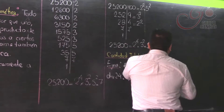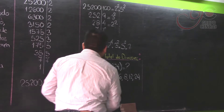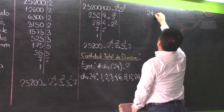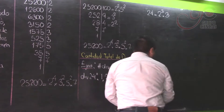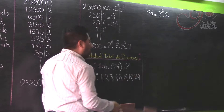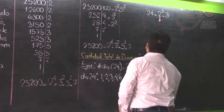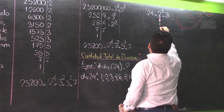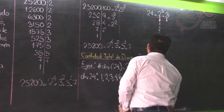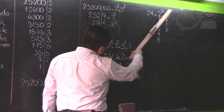Antes de ver la fórmula, ¿de dónde se generan estos números? El número 24 viene de un 2 al cubo por 3. Estos números divisores vienen de combinar los divisores de cada factor. Los divisores de 2 al cubo son: 1, 2, 4 y 8. Los divisores de 3 son: 1 y 3. La obtención de esos divisores proviene de combinar los divisores del primero con los divisores del segundo.